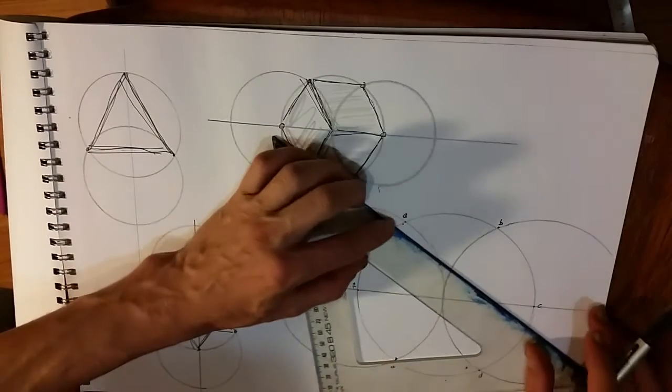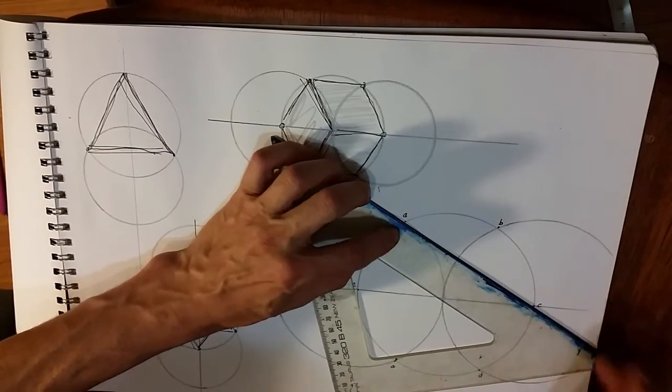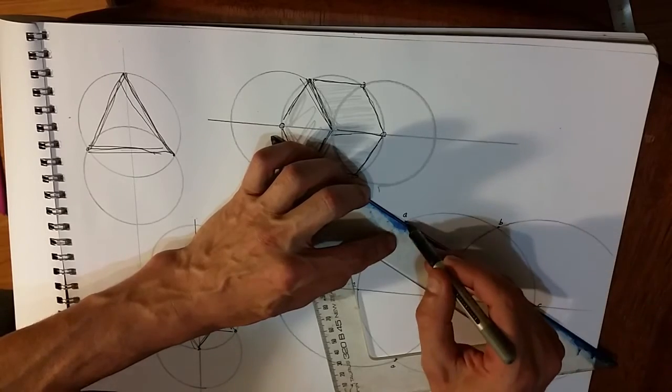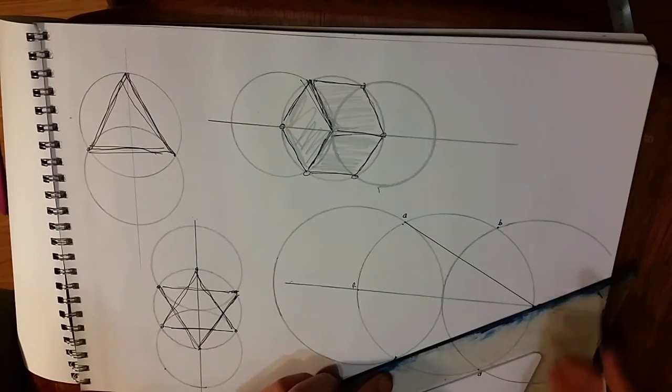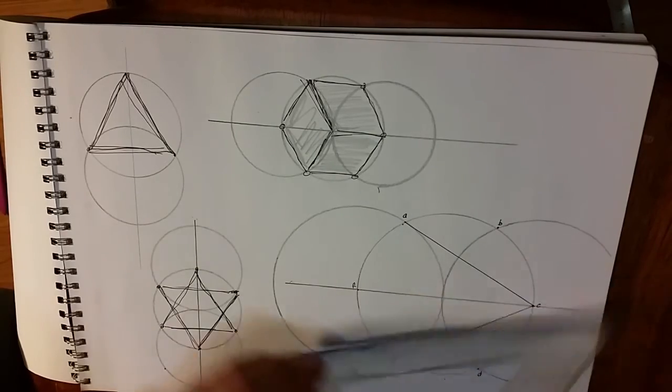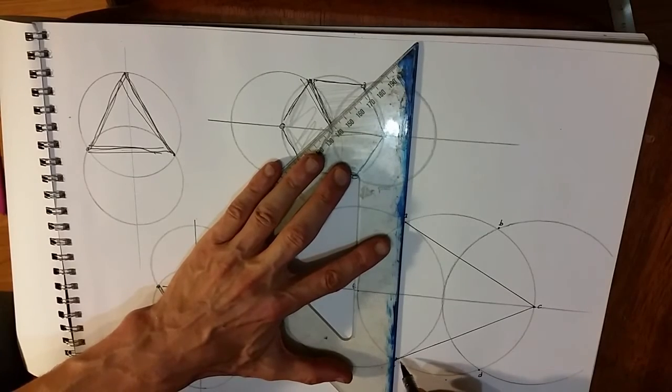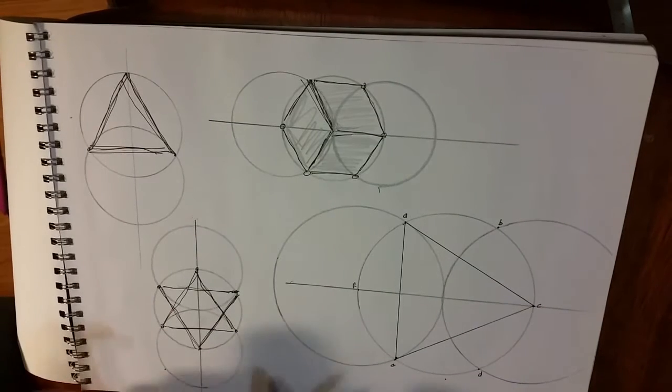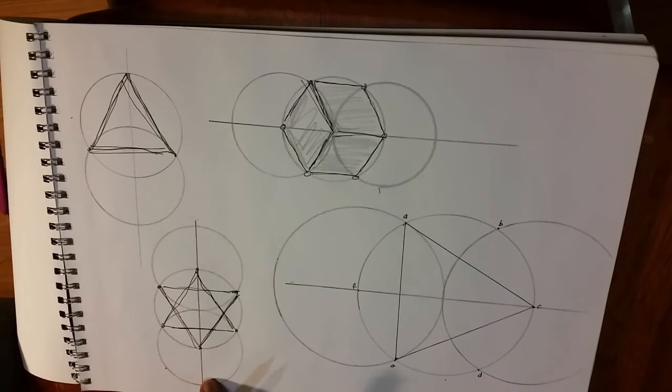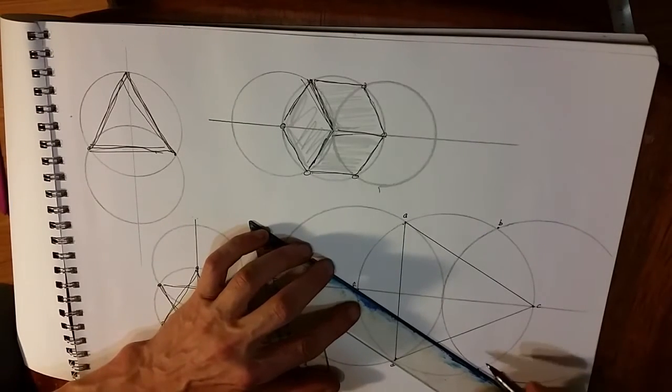From A to C, C to E, E to A we've created an equilateral triangle, and it's one half of the Star of David interlocking. But because this one is vertical, this will be horizontal once we complete it.